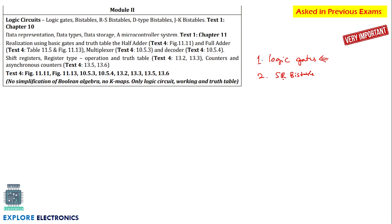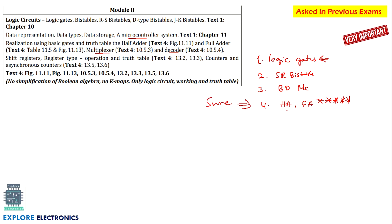The block diagram of the microcontroller system with inputs and outputs is also important. Then, multiplexer and decoder — out of these two we can expect one question. Half adder and full adder is very very important, asked many times in both digital electronics and basic electronics subjects. You can expect this as a sure question. We may also get a 4-to-1 MUX question.